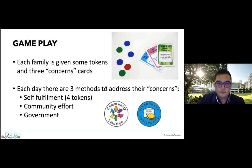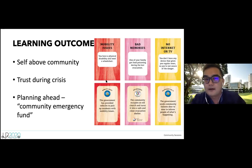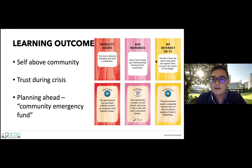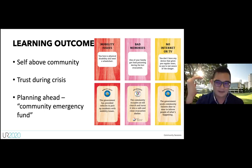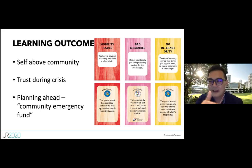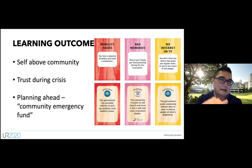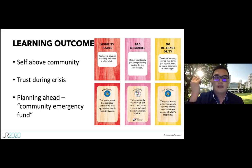Examples of concerns include mobility issues, bad memories of false alarms, and others shown on screen. One interesting observation is that during gameplay, most families put themselves above the community — they prioritize making it out on day four themselves rather than caring whether other families survive.